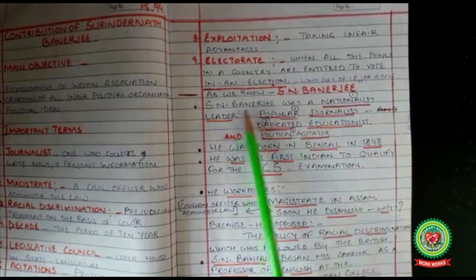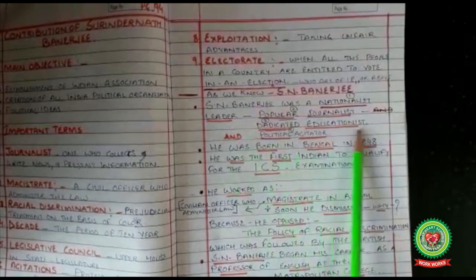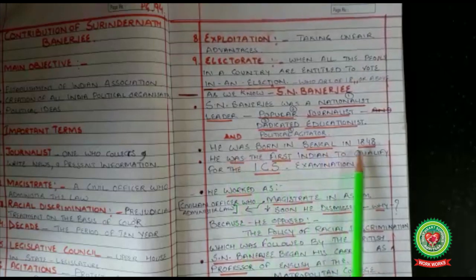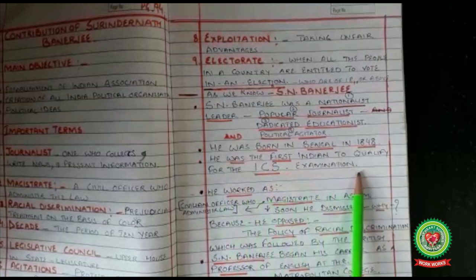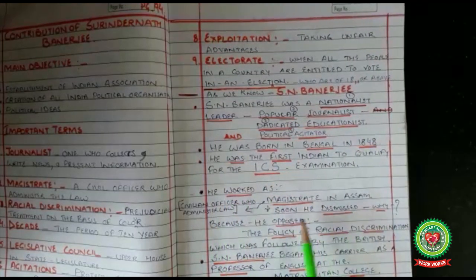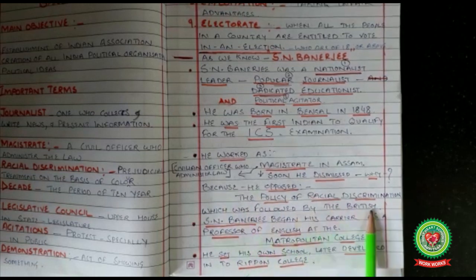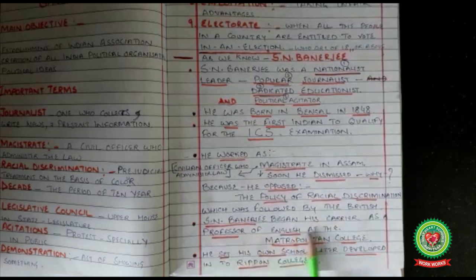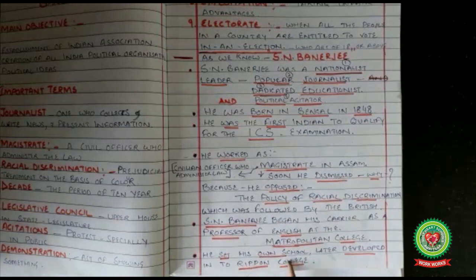SN Banerjee was a nationalist leader, popular journalist, dedicated educationist, and political agitator. He was born in Bengal in 1848. He was the first Indian to qualify for the ICS examination. He worked as a magistrate in Assam but was soon dismissed because he opposed the policy of racial discrimination followed by the British. SN Banerjee began his career as a professor of English at the Metropolitan College and set up his own school, which later developed into the Ripon College.